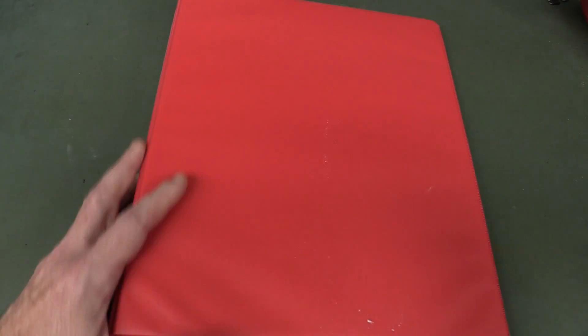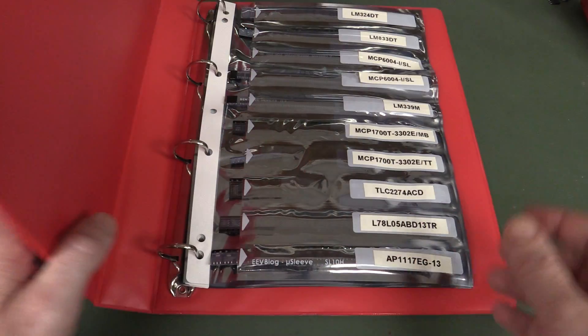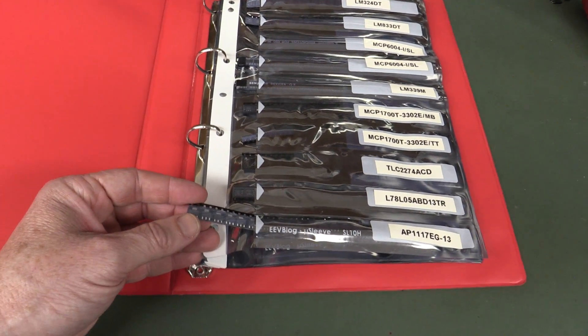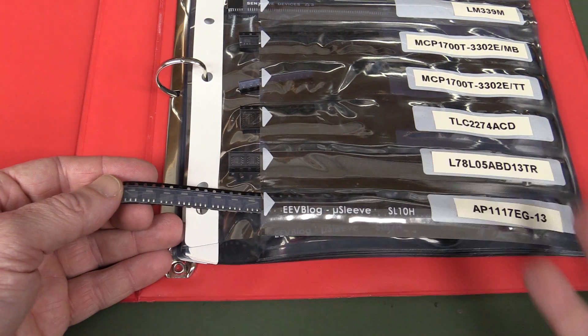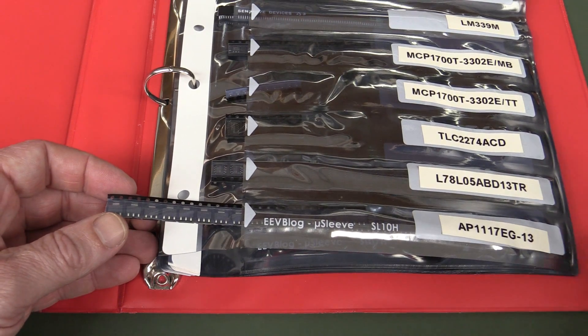It's designed to store your components in a ring binder like this, or your surface mount components. You know when you buy them from DigiKey and Mouser and whatnot, and you get them on the tapes, you buy them on the cut tapes, and you always buy more than you need, of course, and then you keep them. Well, how do you store them nicely?